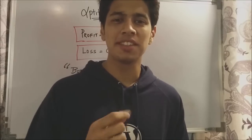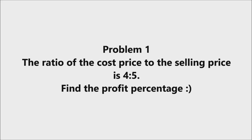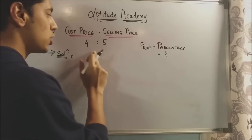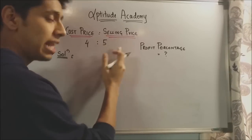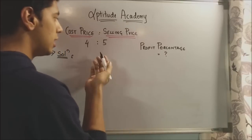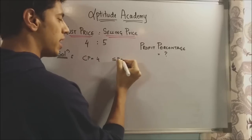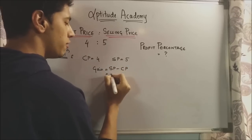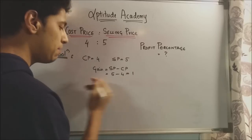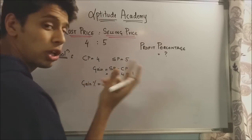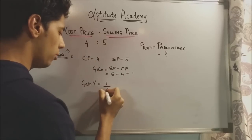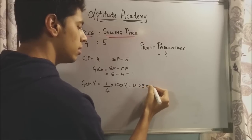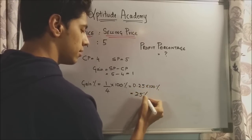Now let's solve a simple problem. Problem 1: The ratio of the cost price to the selling price is 4:5. Find the profit percentage. The CP is 4 and SP is 5. Since SP is more than CP, we have a profit. Gain equals SP minus CP, so 5 minus 4 equals 1. Gain percentage is calculated on the CP, so gain divided by CP into 100% equals 1 divided by 4 into 100, which equals 25%.